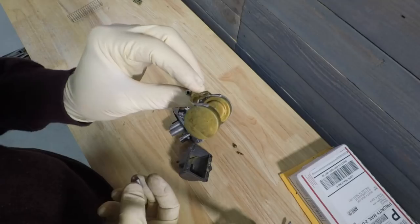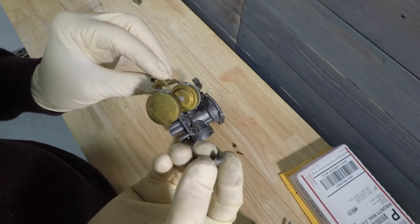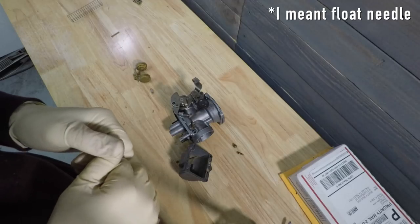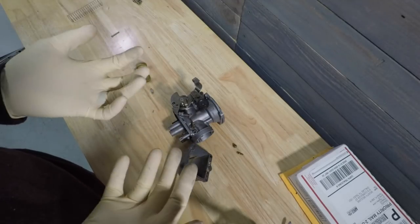All motorcycle carburetors are going to have what they call a float and along with it, a float valve. So how does this all kind of come together and work?